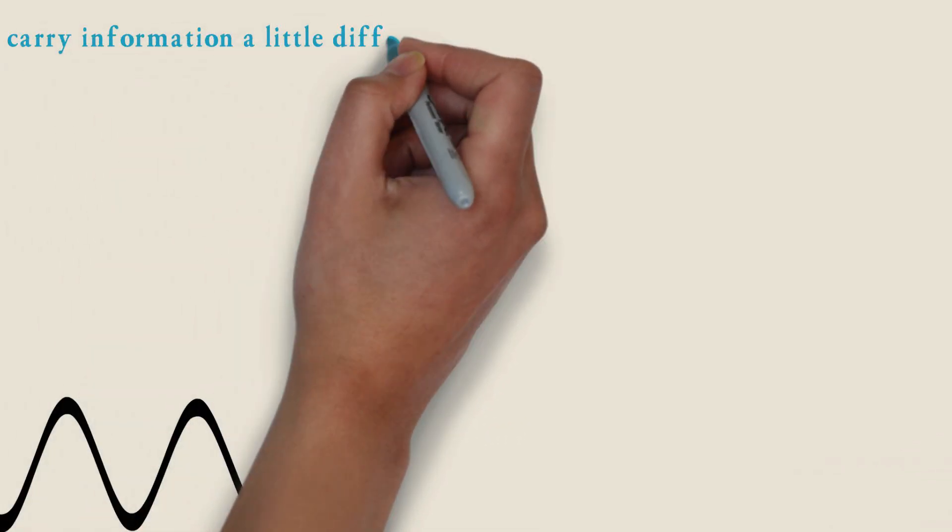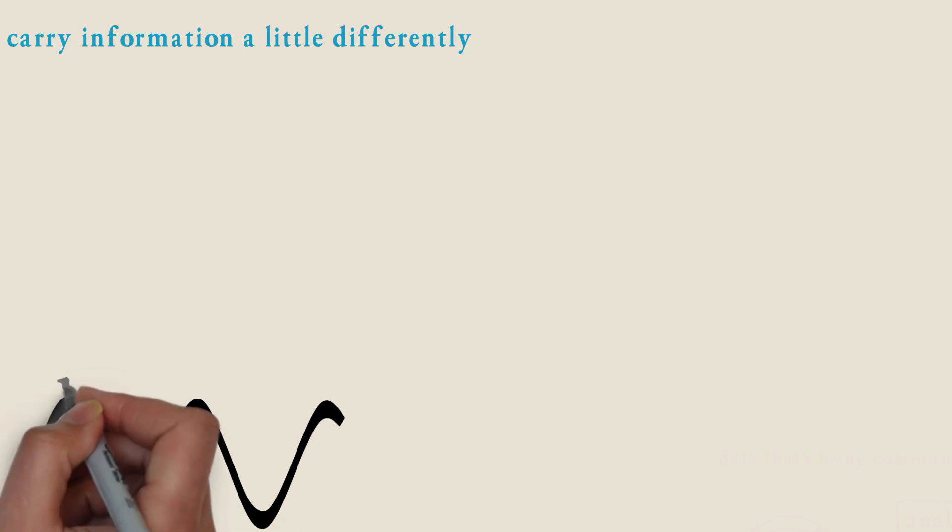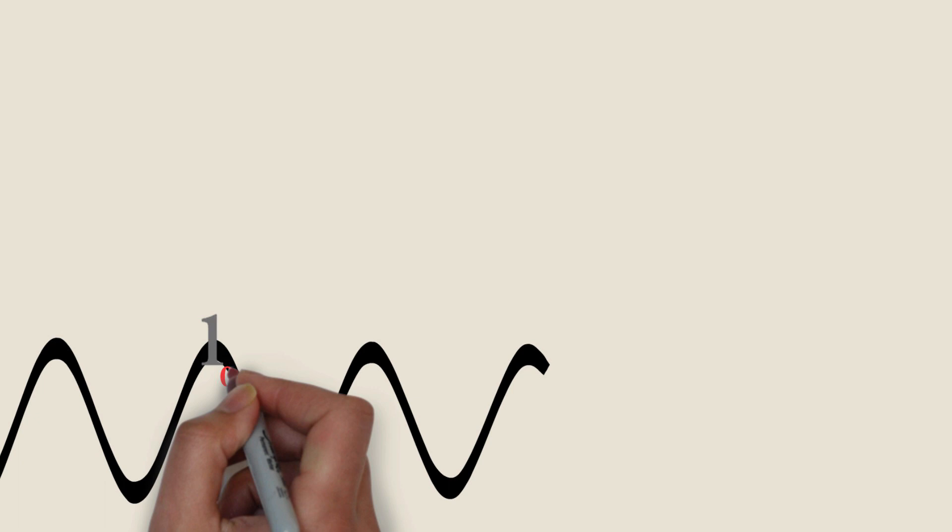Now let's move to analog signals. Analog signals carry information a little differently, in the form of a range. We might still see zeros and ones, but we also might see something in between, like 0.5 or 0.2 or 0.1.